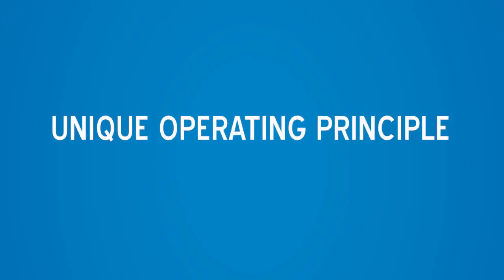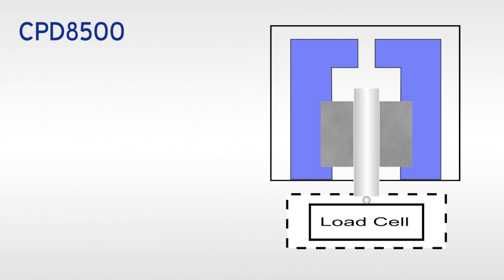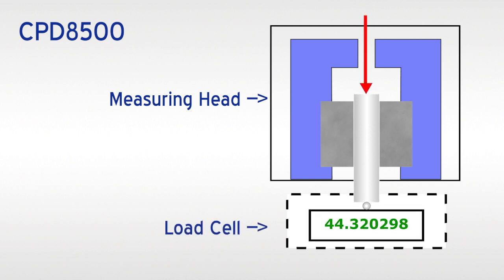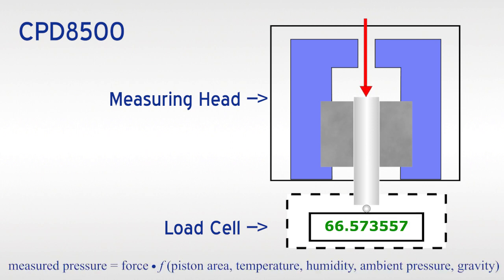The unique operating principle follows the fundamental concept of a piston gauge. The pressure is applied on the measuring head to the effective area of the piston and is converted into an equivalent force. The force is transferred to the measuring load cell housed within the base. The load cell continuously measures and calculates the pressure generated force. The base converts the measured force to the equivalent pressure and corrects for environmental influences.